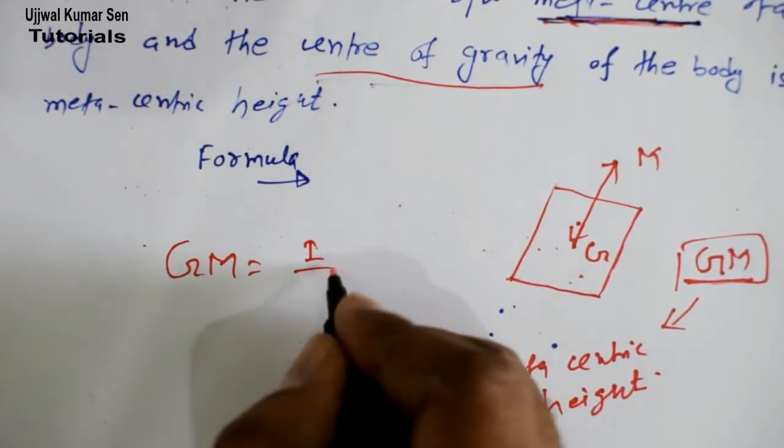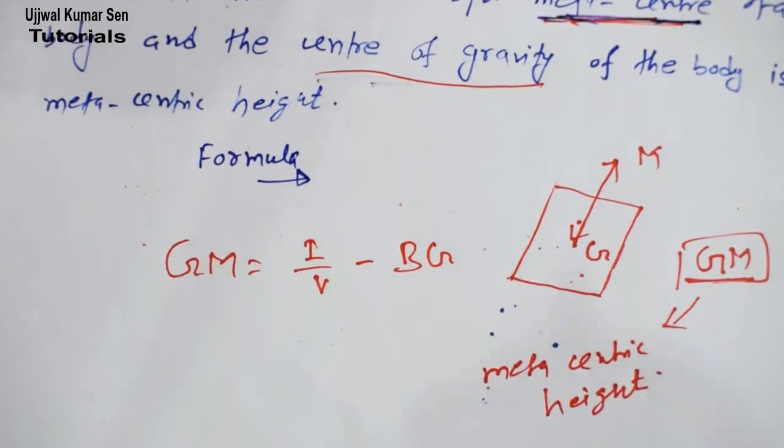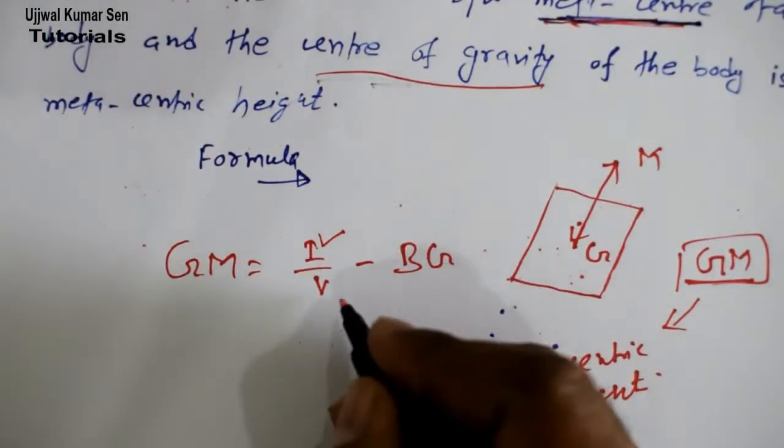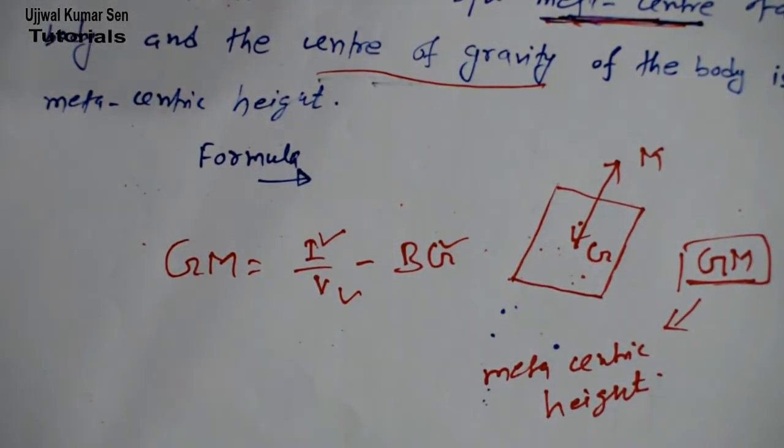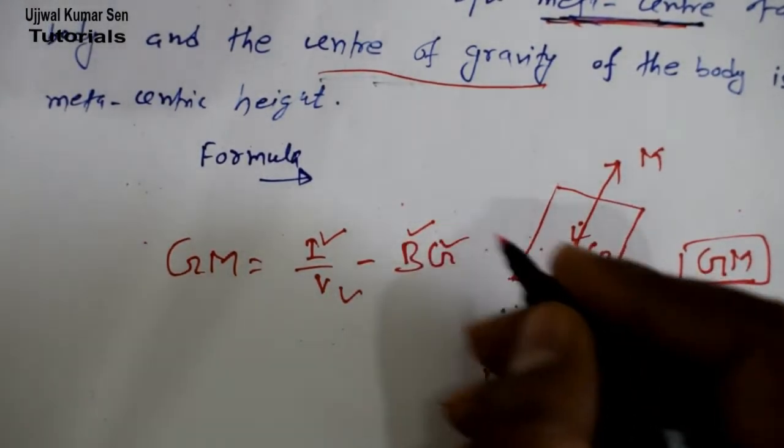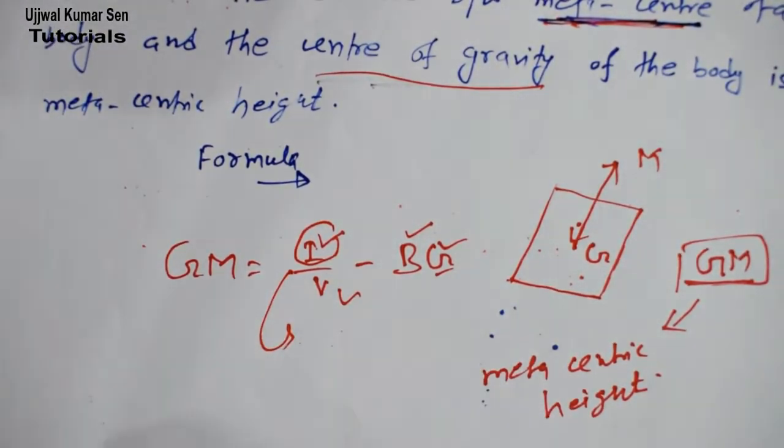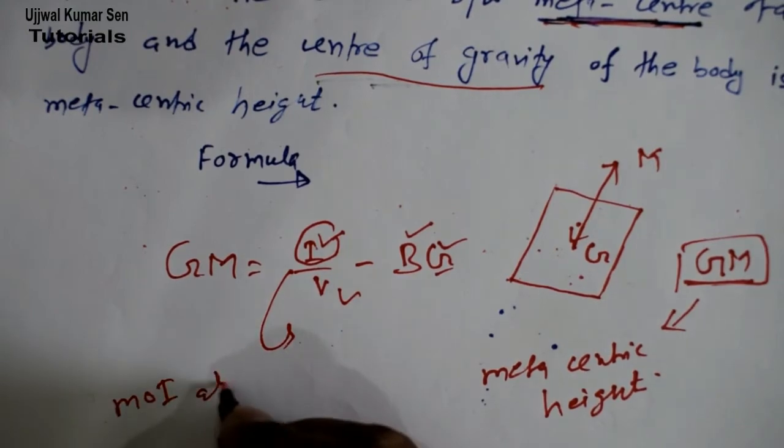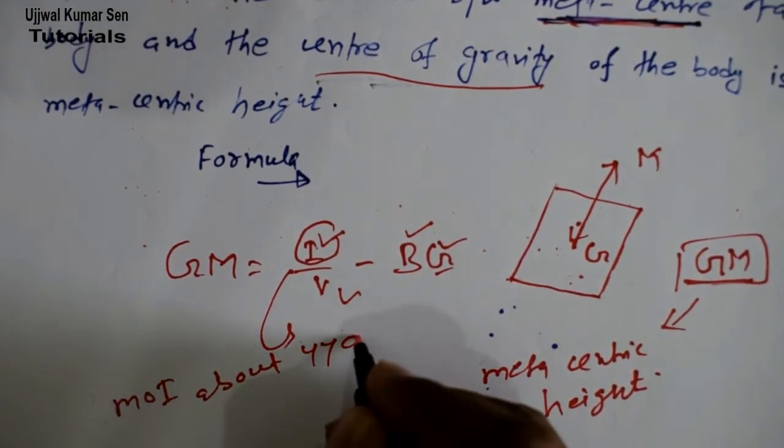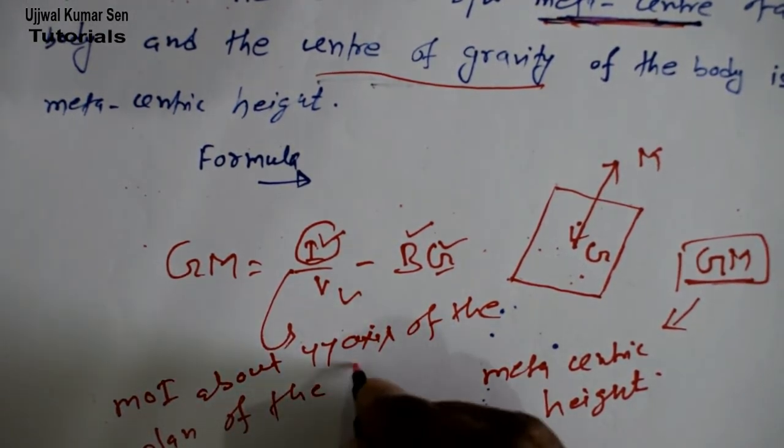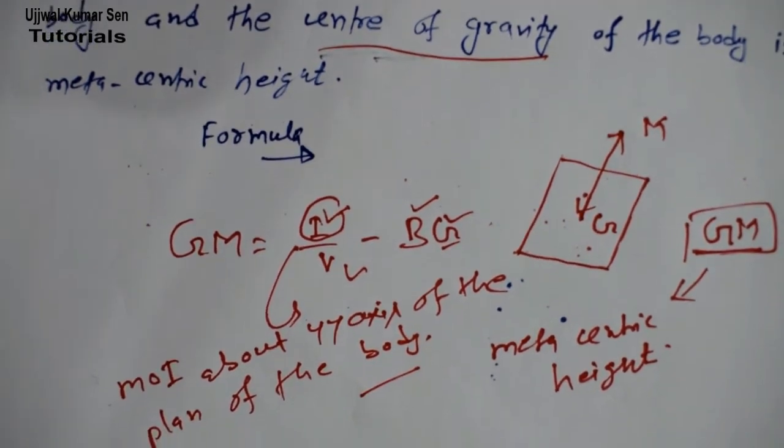Now what is GM? GM is equal to I upon V minus BG. Now we need to understand about these terms. What is BG? BG means B is buoyancy and G means center of gravity. So it is showing the distance between buoyancy and center of gravity.